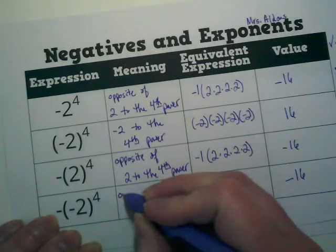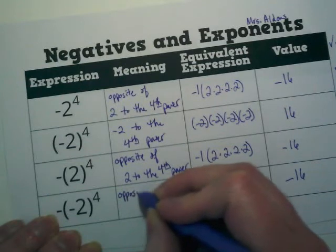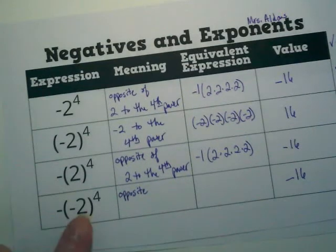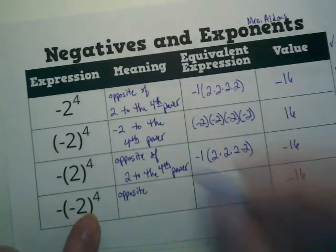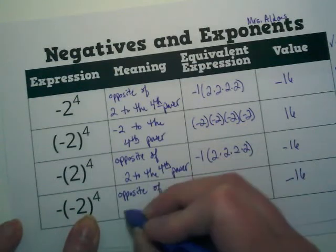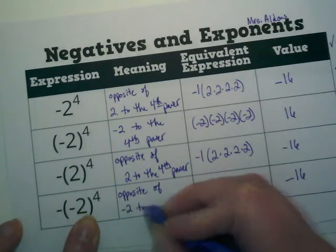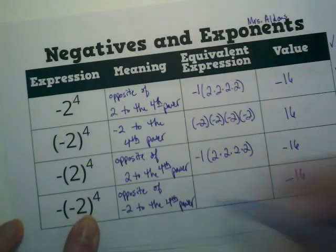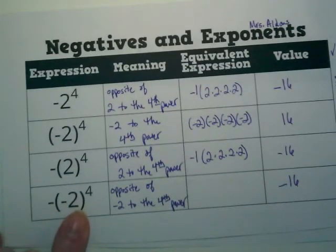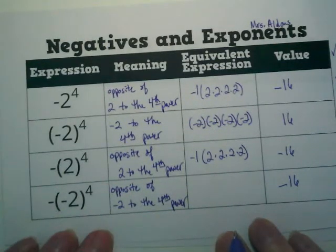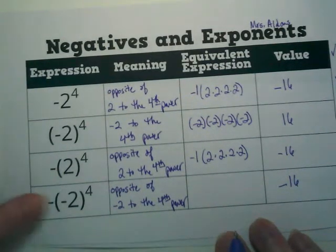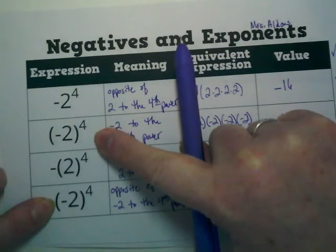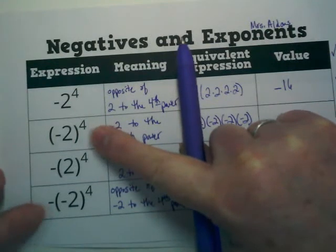This one is slightly different, but it starts out with opposite because where is there a negative? It's outside the parentheses, and there's also a negative inside the parentheses, so this is opposite of negative 2 to the fourth power. This one is really close to the second one. If that negative wasn't there in the front, this would be exactly the same as this. But instead, because that's there, these two are opposites.